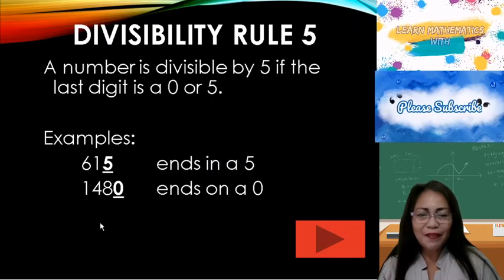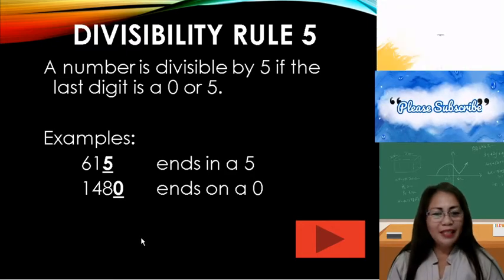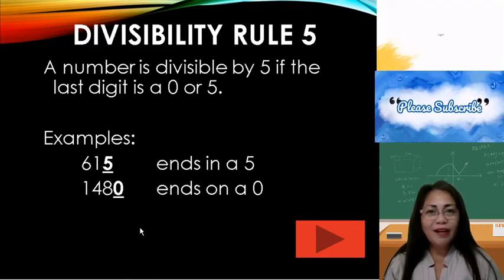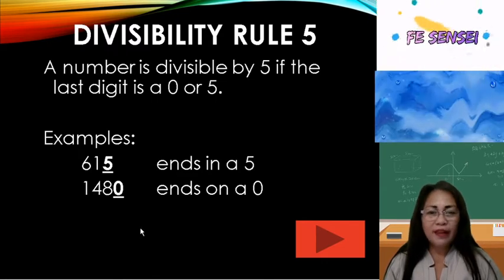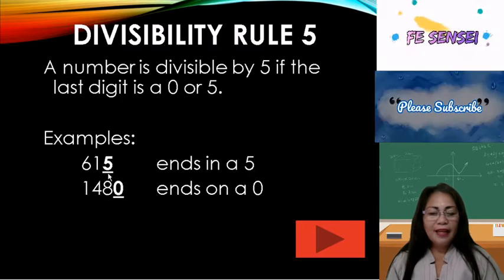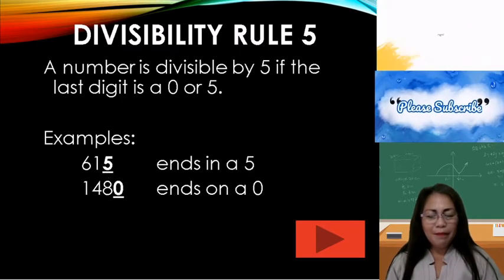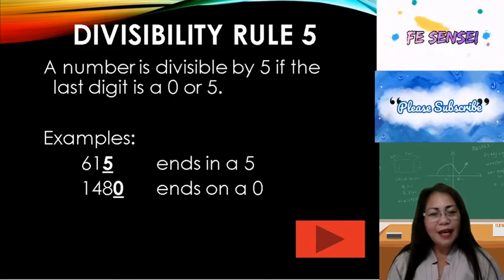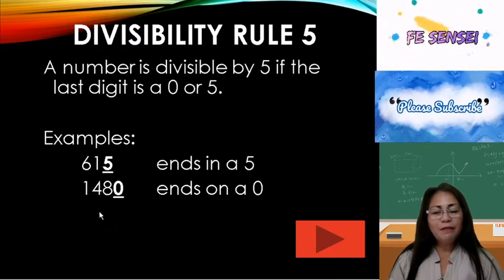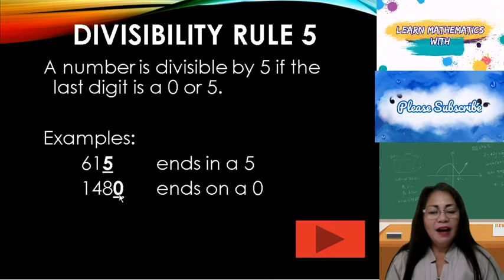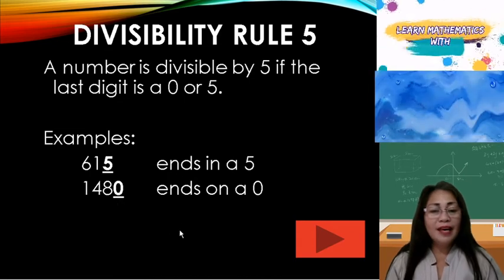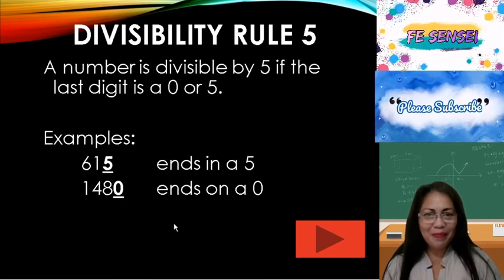Divisibility rule 5: A number is divisible by 5 if the last digit is 0 or 5, or it ends with 0 or 5. Example: 650 — it ends in 0, therefore 650 is divisible by 5. Another example: 1,480 — it ends in 0, therefore 1,480 is divisible by 5.